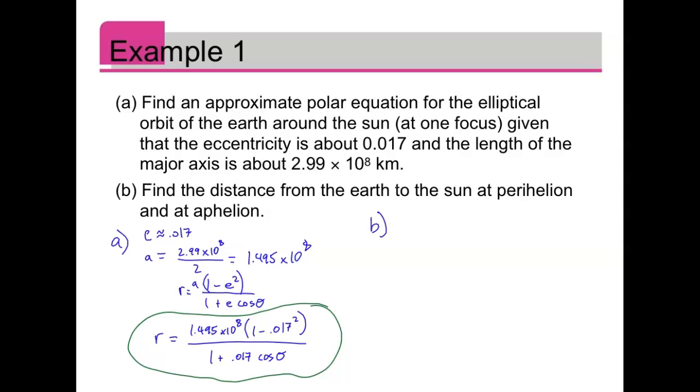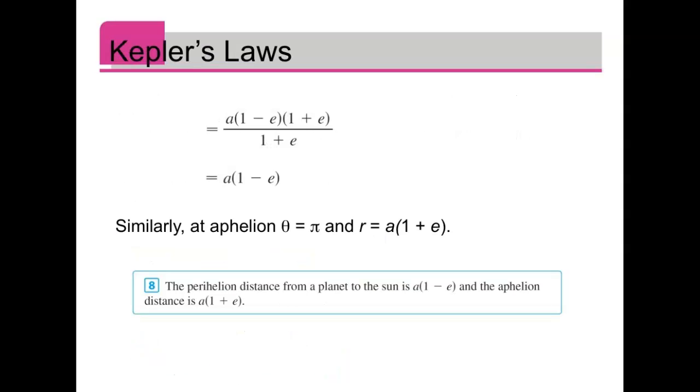Part b, find the distance from the earth to the sun at perihelion and at aphelion. So perihelion is a times 1 minus e, and aphelion is a times 1 plus e.